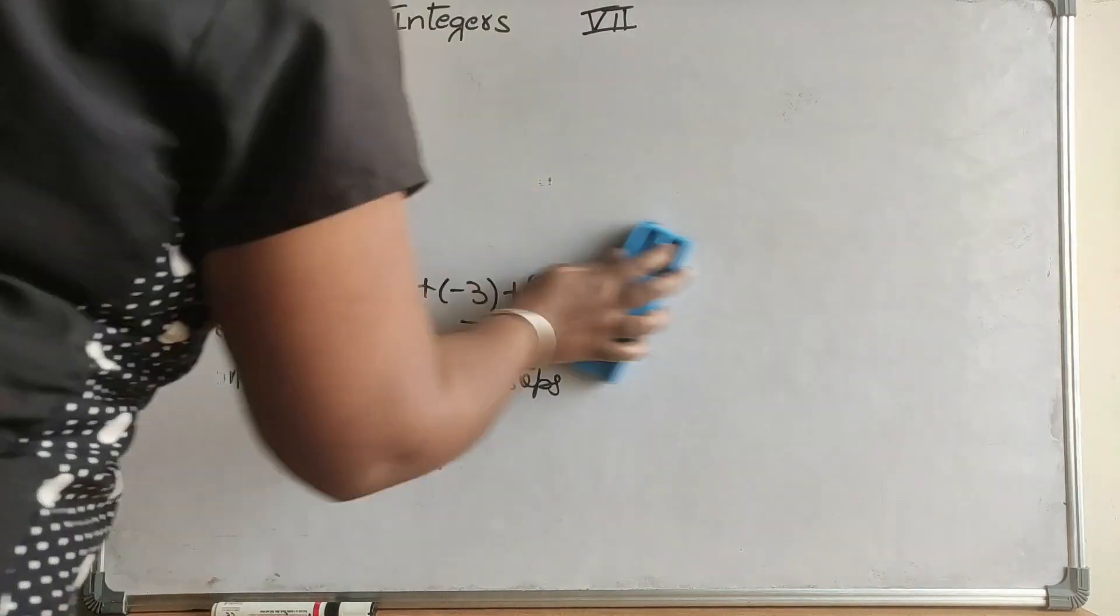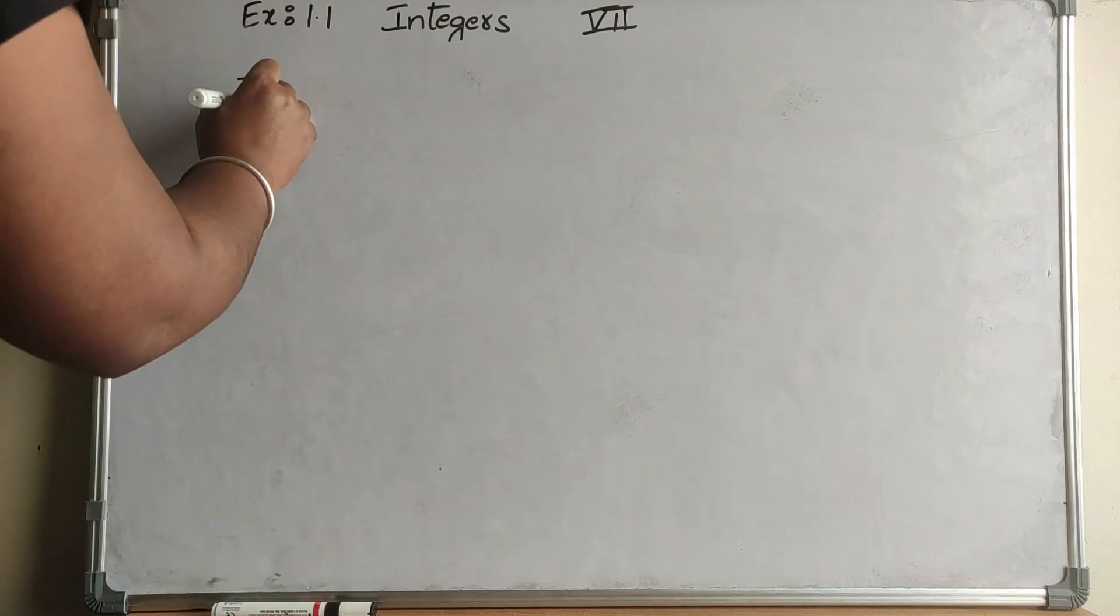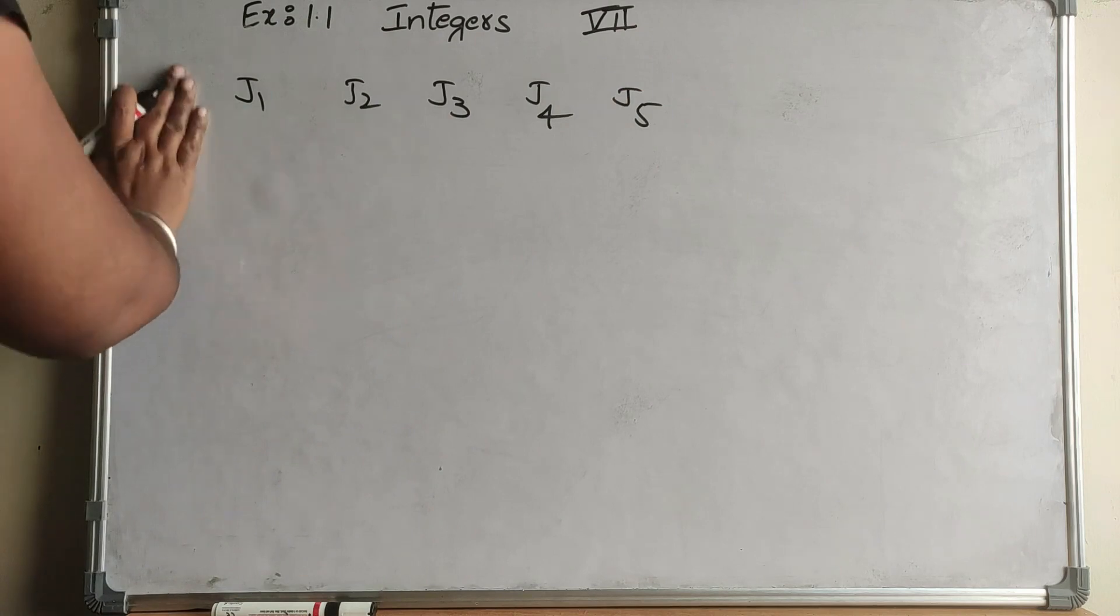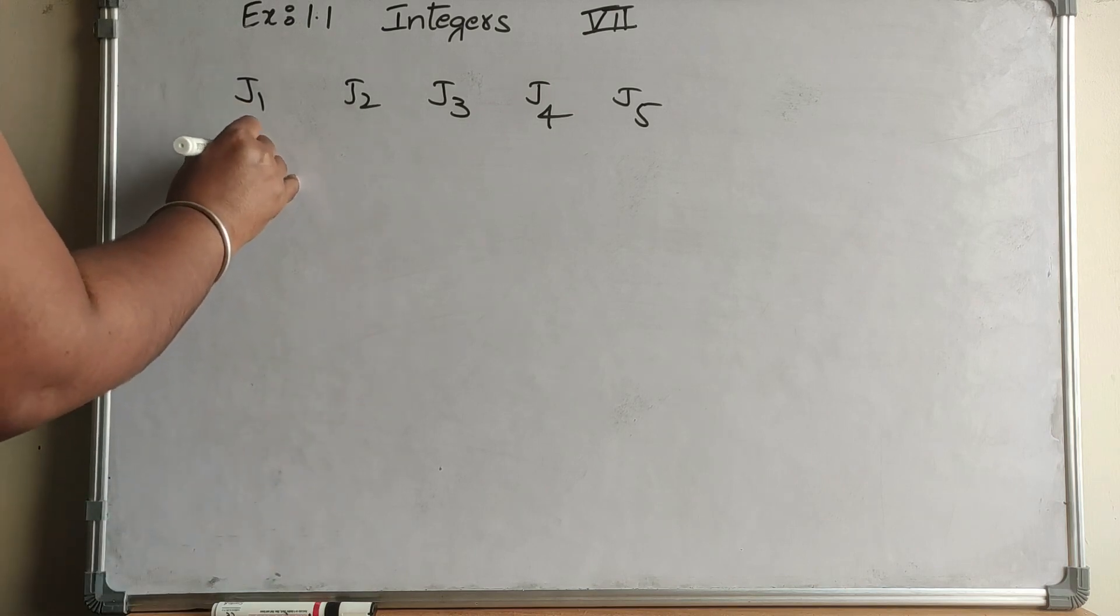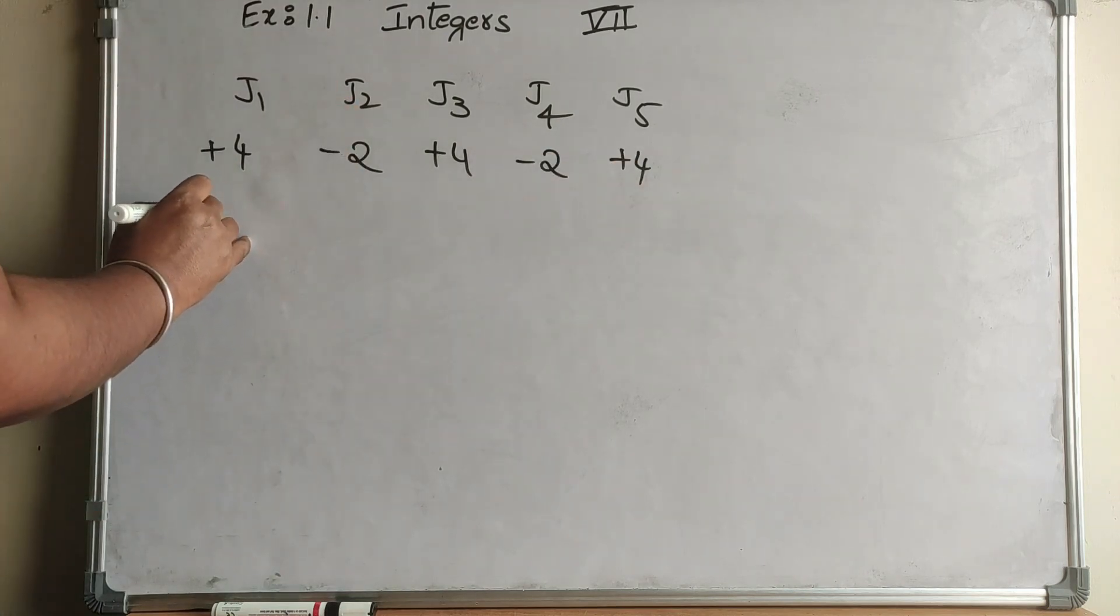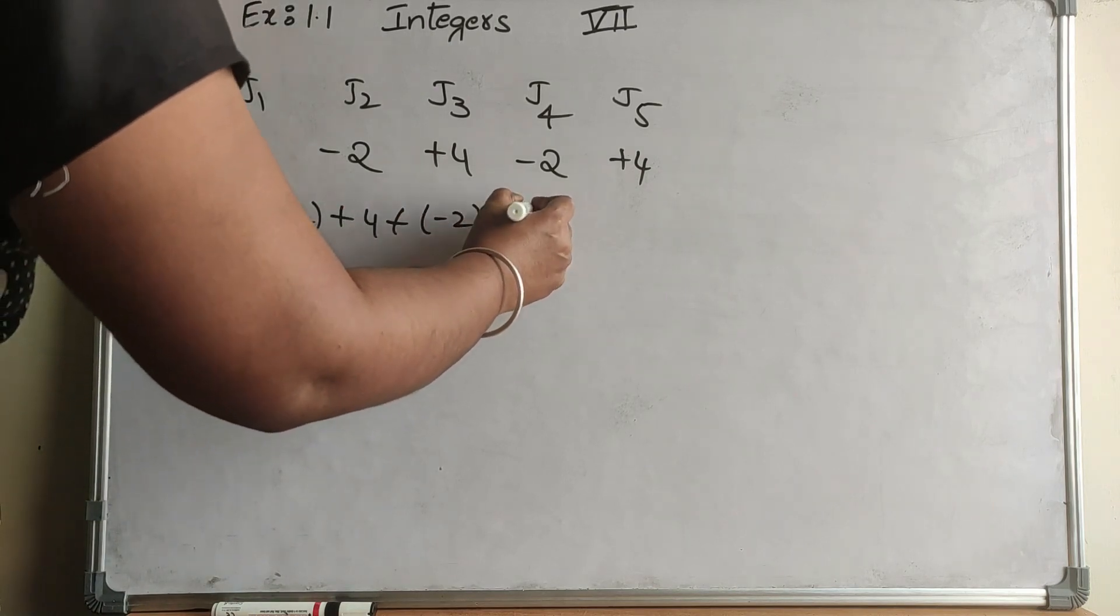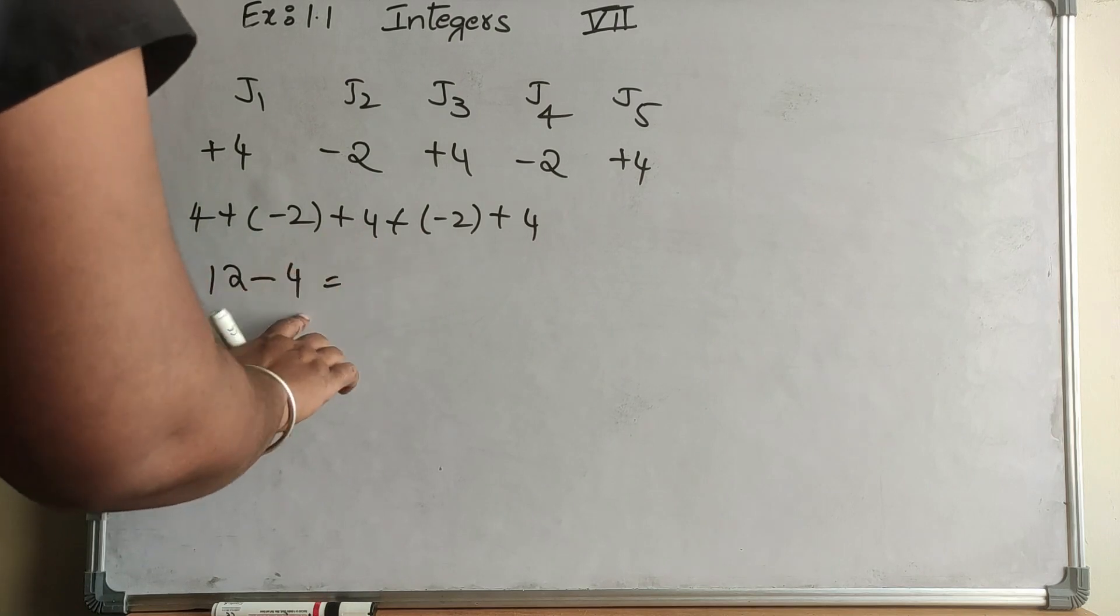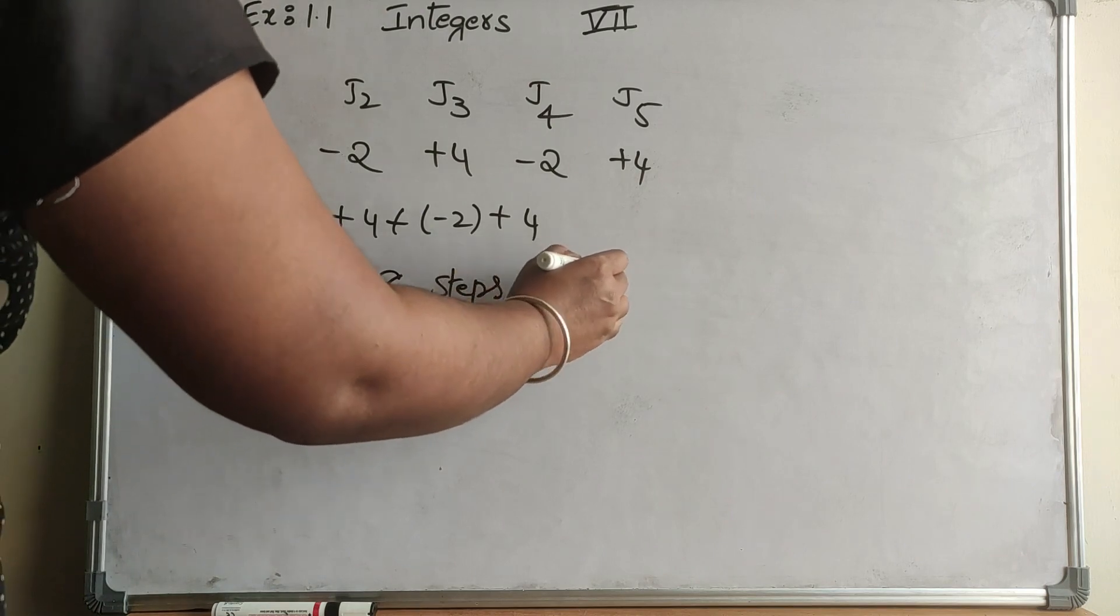For the second question, there are 5 jumps. Jump 1, 2, 3, 4, and 5. First goes 4 up and 2 down: +4, -2, +4, -2, +4. So we have +4 - 2 + 4 - 2 + 4. That's 3 fours, which is 12, minus 2 twos, which is 4. 12 - 4 equals +8, which is 8 steps up by the monkey.